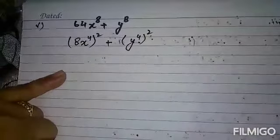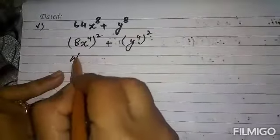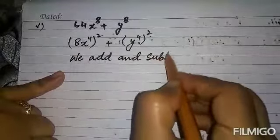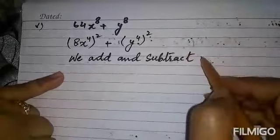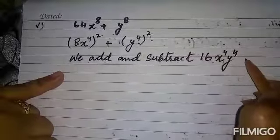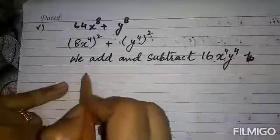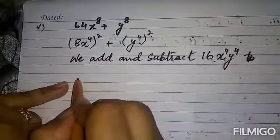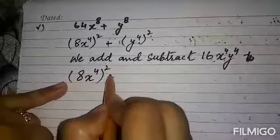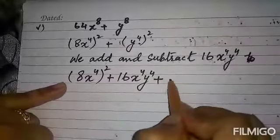The middle term we need is 2 × 8x⁴ × y⁴, which gives 16x⁴y⁴. So we can add and subtract 16x⁴y⁴ to make it a perfect square. After adding 16x⁴y⁴, we get (x⁴)² + 16x⁴y⁴ + (y⁴)², which is a perfect square.